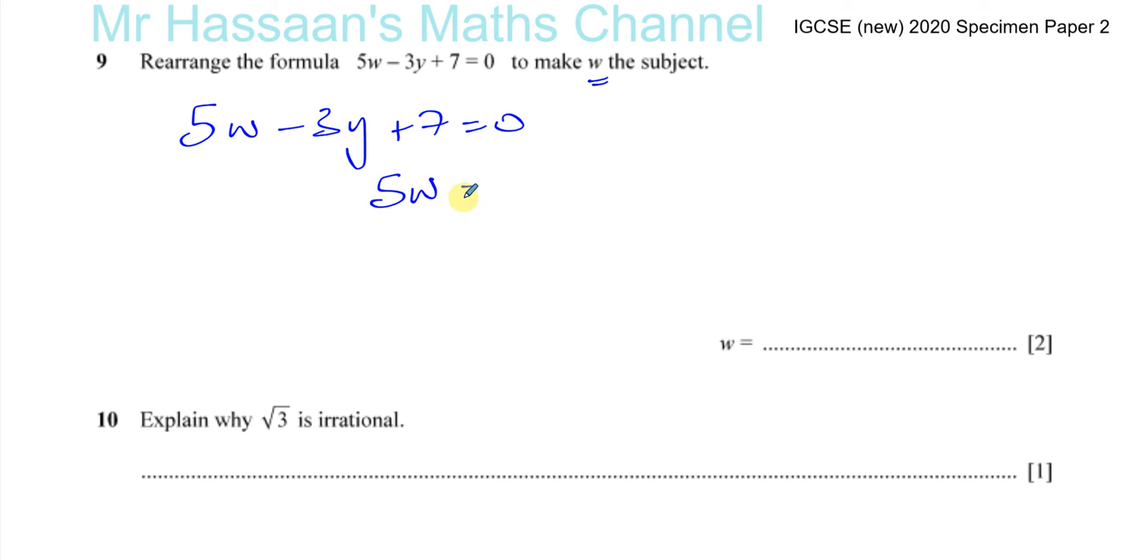So I'll put 5w is equal to, and I'll add 3y to both sides to get rid of the minus 3y, which in this case will be gone from here.